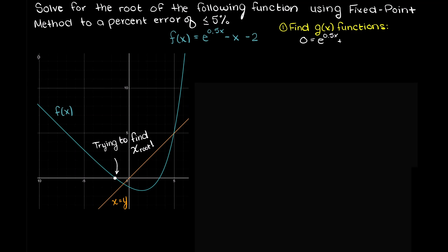With this function we can create two other functions that we will call g1 and g2. Solving through, we can see that g1 is equal to e to the power of 0.5x minus 2, and g2 is equal to 2 ln of x plus 2.